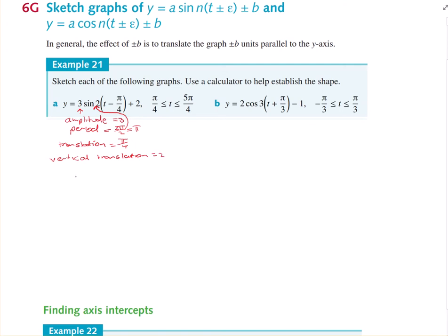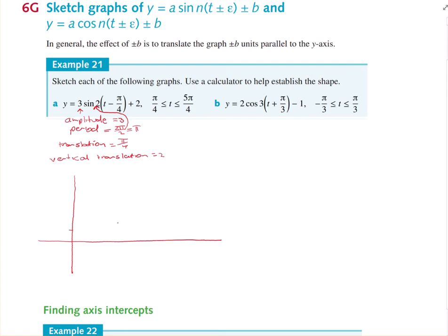If we do our sketch, because the vertical translation is 2, I'm going to move the centre line up to 2 — just put a dotted line in there, because that's the centre line of the graph. The amplitude is 3, so going up 3 brings us to 5. Our maximum is the vertical translation plus the amplitude, and minus the amplitude gives us minus 1. So our range is between minus 1 and 5.